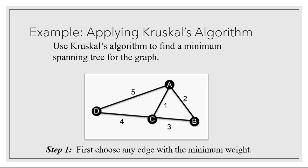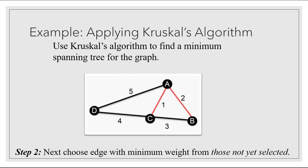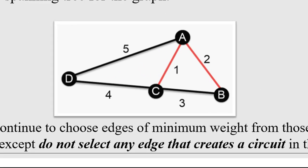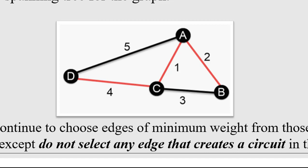Let's use Kruskal's algorithm to find a minimum spanning tree for the graph we were just looking at. Step one: choose any edge with minimum weight. In this case, the lowest weight edge has weight one — that's edge AC. Step two: choose the next edge with minimum weight from those not yet selected. We have edges of weights two, three, four, and five left, so we select edge AB which has weight two. Step three: continue choosing edges of minimum weight. The lowest remaining is BC with weight three, but we can't select that one because it forms a circuit, so we have to skip over the three and select the edge of weight four from C to D.